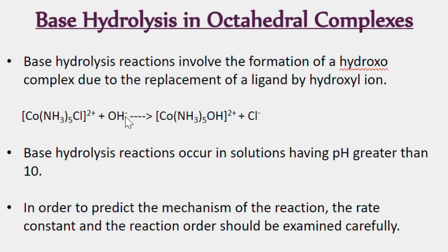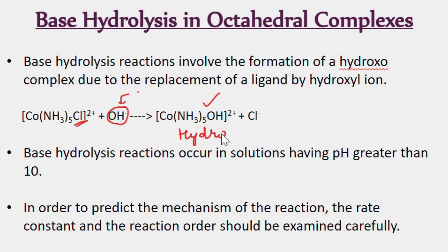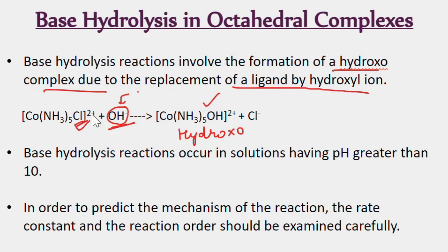What is base hydrolysis? In acid hydrolysis, our attacking ligand is water. But in base hydrolysis, OH⁻ is our attacking ligand. So here, OH⁻ replaces Cl⁻ in the complex, and this complex is called a hydroxo complex. Base hydrolysis reactions involve the formation of a hydroxo complex due to replacement of a ligand by hydroxyl ion. When a ligand is replaced by hydroxyl ion, we call it base hydrolysis.